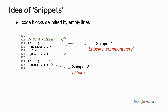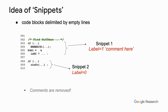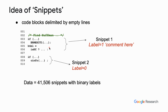Then, when a snippet contains a comment anywhere within its span, we label it with 1, meaning that's a snippet that should be commented. Otherwise, it gets a label 0. Also, the comments are removed from the data, so the snippets only contain the actual code lines. Our data contains 41.5 thousand such snippets with binary labels.